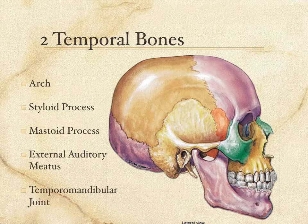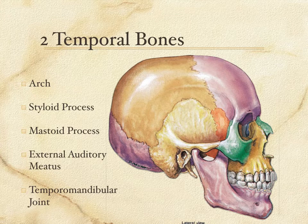So there are the two temporal bones. We've found the frontal bone, the two parietal bones, the single occipital bone, and the two temporal bones — six out of the eight bones. You can see they cover the front, top, back, sides, and underside of the brain.